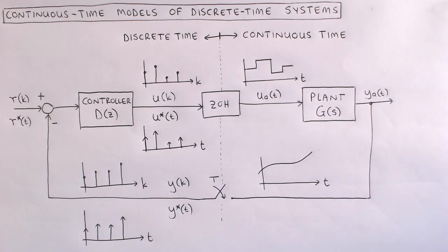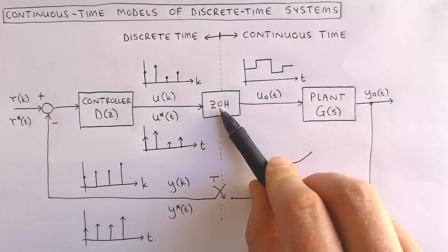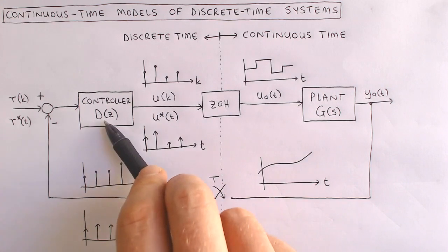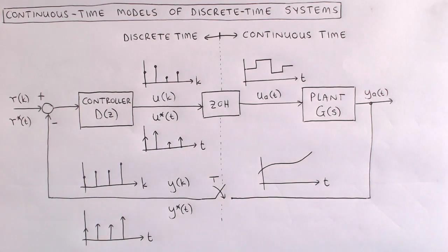In order to do this, we need to find a continuous time model of the discrete time parts. In this video, we will look at continuous time models for sampling, zero-order hold, as well as the combination of the sampler, a constant controller, and a zero-order hold circuit called sample and hold.